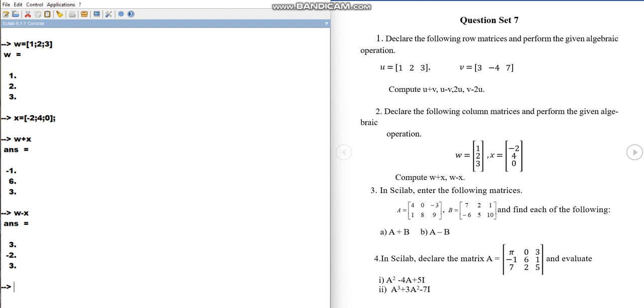Now in the third question, the matrix is given which is of order 2 by 3, 2 rows and 3 columns. So let us learn how we can declare this, a is equal to, 4, 0, minus 3 is the first row. So let us write 4, 0, minus 3.